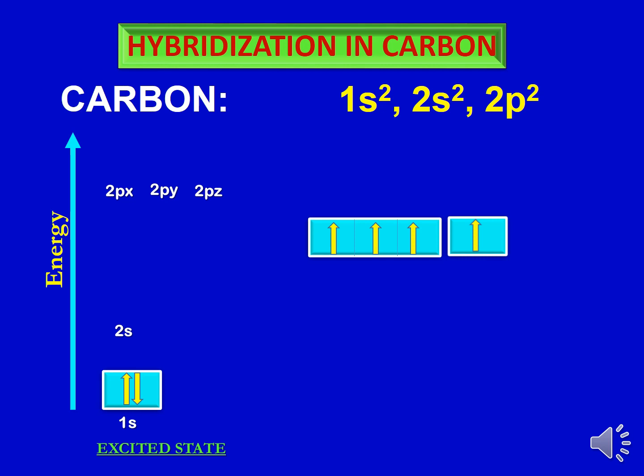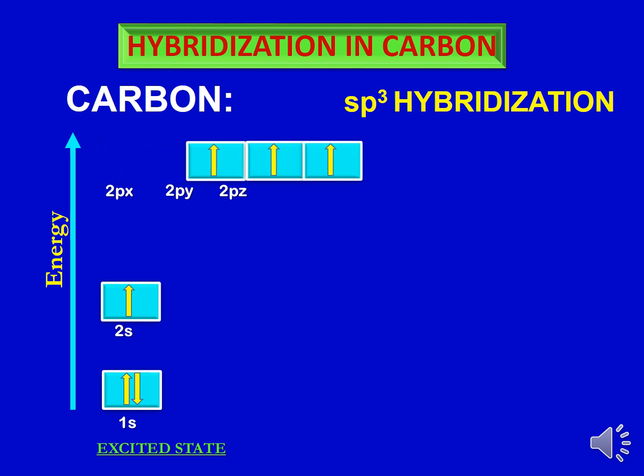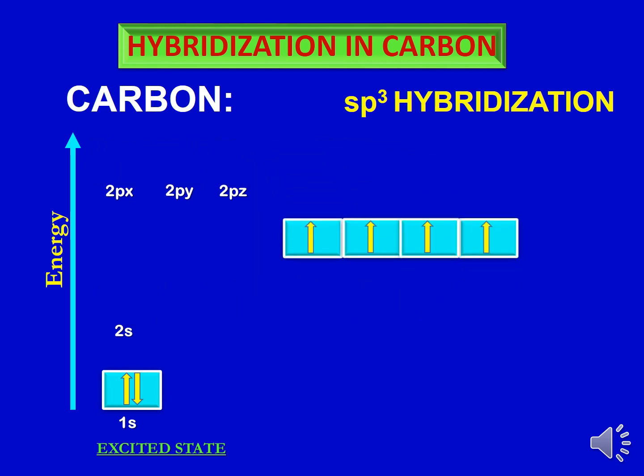Carbon can have different hybridizations. Let us first discuss SP3 hybridization. As the name indicates, this is a type of hybridization in which one s orbital combines with three p orbitals to form four new hybridized orbitals called SP3 hybridized orbitals. Remember: the number of hybridized orbitals formed is always equal to the number of atomic orbitals mixing together. So mixing one s with three p orbitals — four atomic orbitals total — produces four SP3 hybridized orbitals.